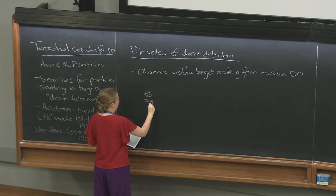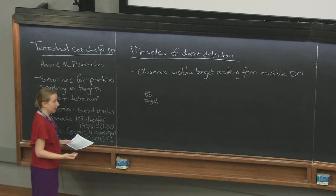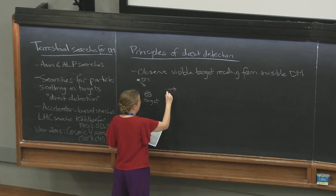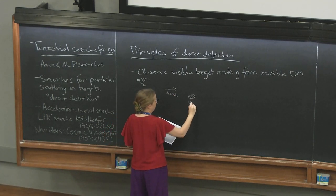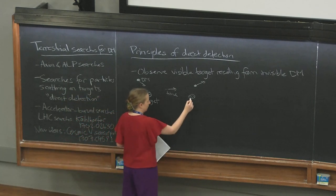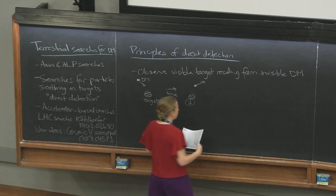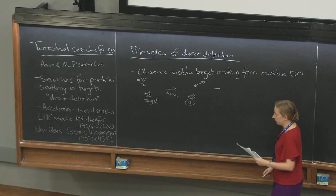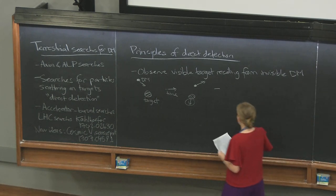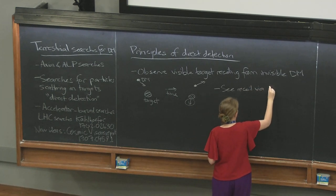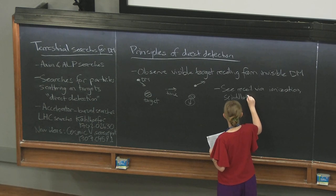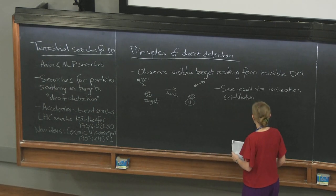So how do we observe that recoil? You can see the effects through looking for, for example, ionization in the target, for phonons or sound in the target, for scintillation or excitation. Depending on what material you use as your target, that changes the available signatures, but they're all looking for basically the same thing: the momentum transfer from the dark matter to the target. For very light dark matter, you may be interested in looking at absorption onto the target rather than this kind of recoil — that's similar in principle but a different sort of strategy.